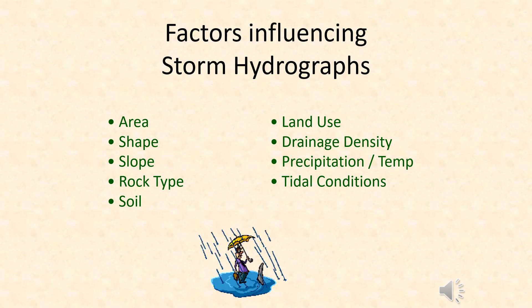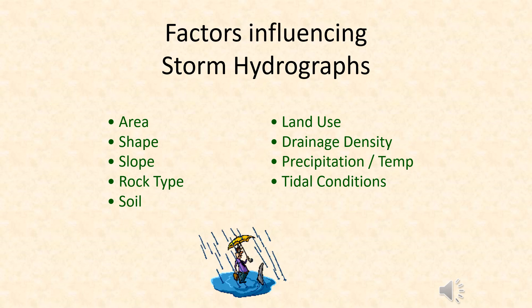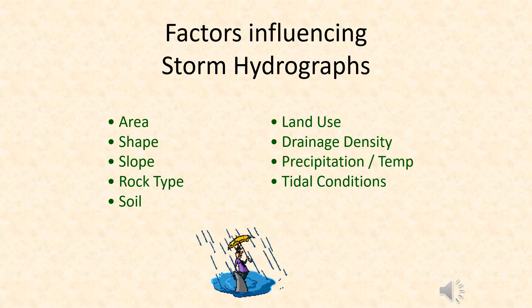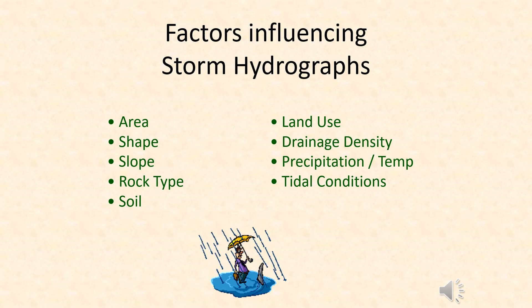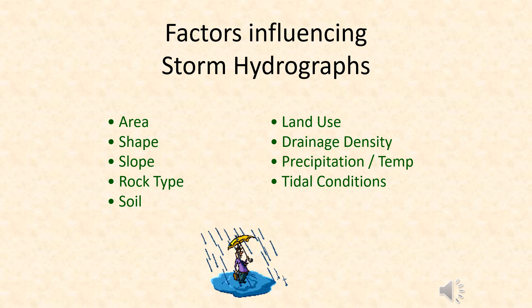Overall, the main factors we're going to look at are: area, shape, slope, rock type, soil, land use, drainage density, precipitation and temperature, and also tidal conditions. These are the main factors that influence what the storm hydrograph does and how likely a river is to flood.